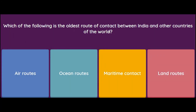Which of the following is the oldest route of contact between India and other countries of the world? Options: air routes, ocean routes, maritime contact, or land routes. The oldest route is land routes — that is how other countries used to be in contact with India historically. So the correct answer is land routes.